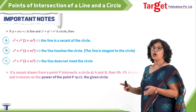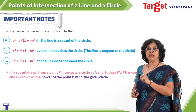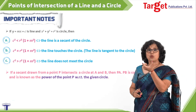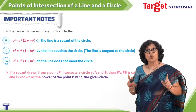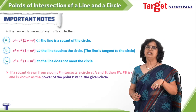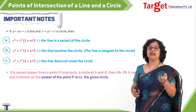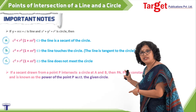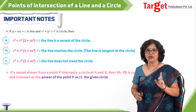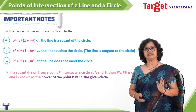The next important note is: if a secant drawn through point P intersects the circle at two points A and B, then PA times PB is a constant. This quantity is known as the power of a point with respect to a circle. This is something we may use in problem solving, and you may have already seen it in geometry.